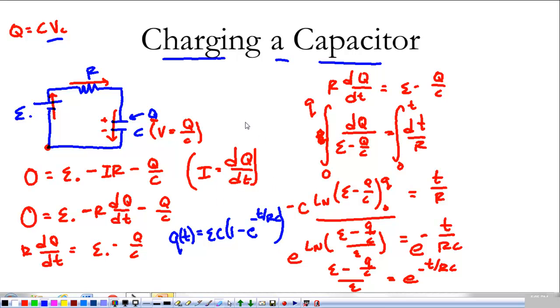And what that gives me is a function, Q, that starts off at 0 and approaches some asymptote, which is what we discussed before. And if we're feeling crazy, we could take the derivative of this and it's going to give me a function for the current.